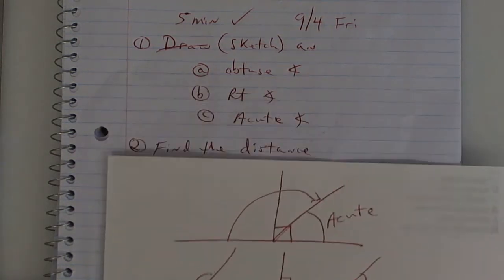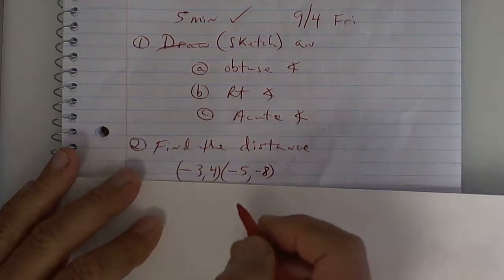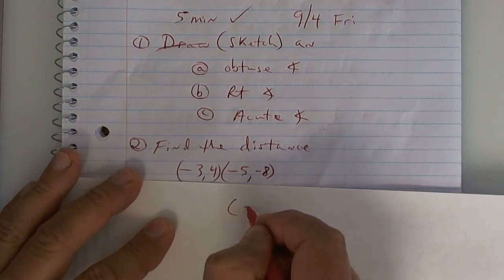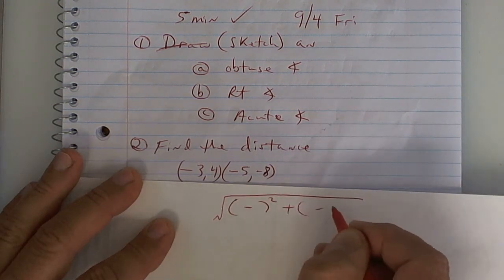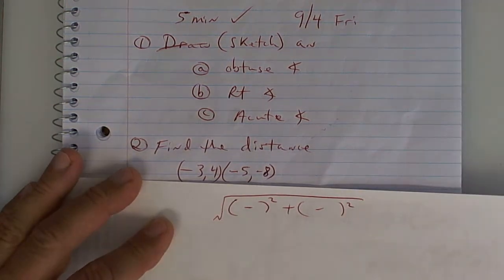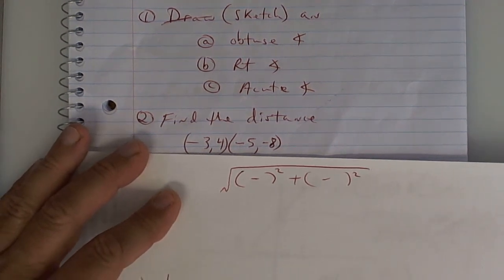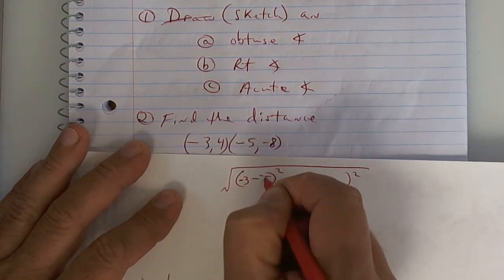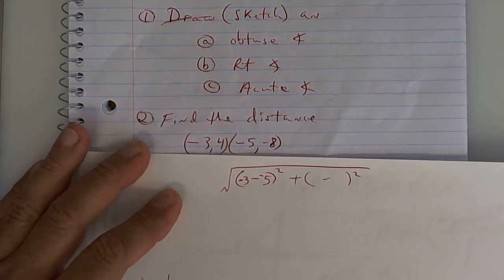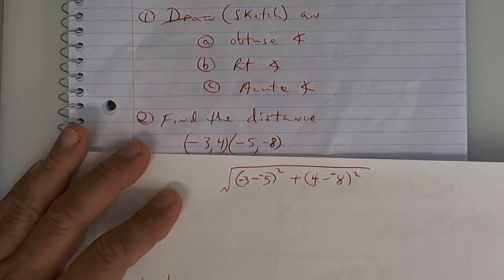All right, next. The distance. Now, we've been doing this one forever. So here we go. Put your formula like so. What are my x's? Negative 3 and negative 5. What are my y's? 4 and negative 8. Is everybody clear so far?